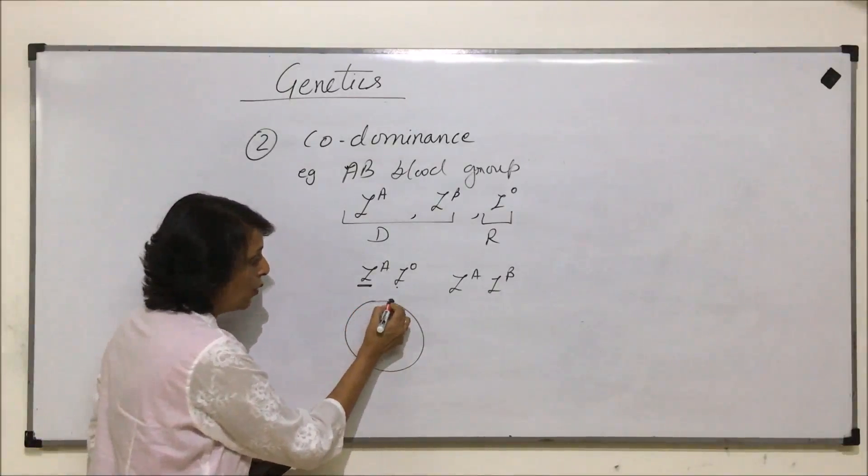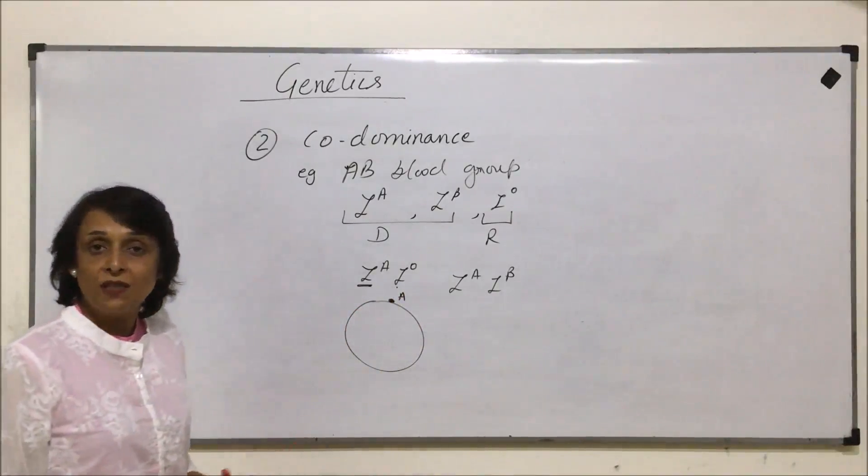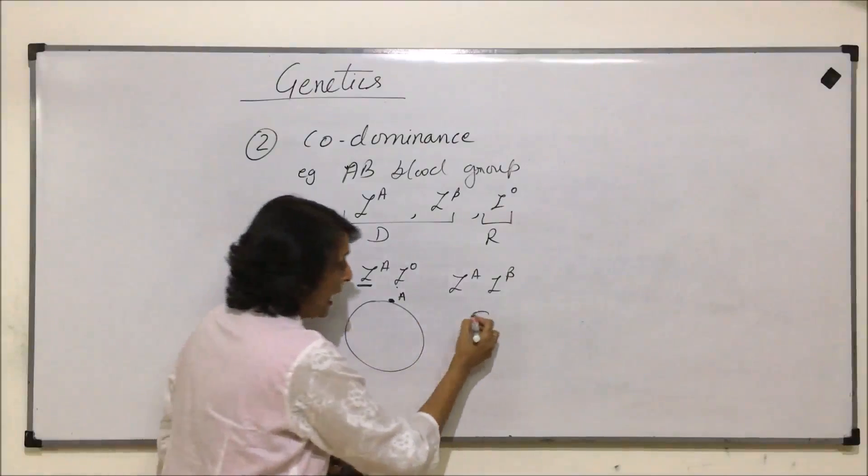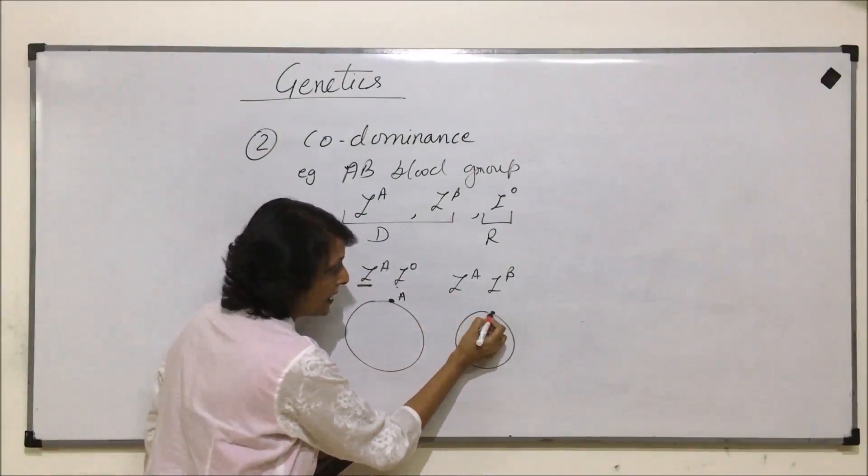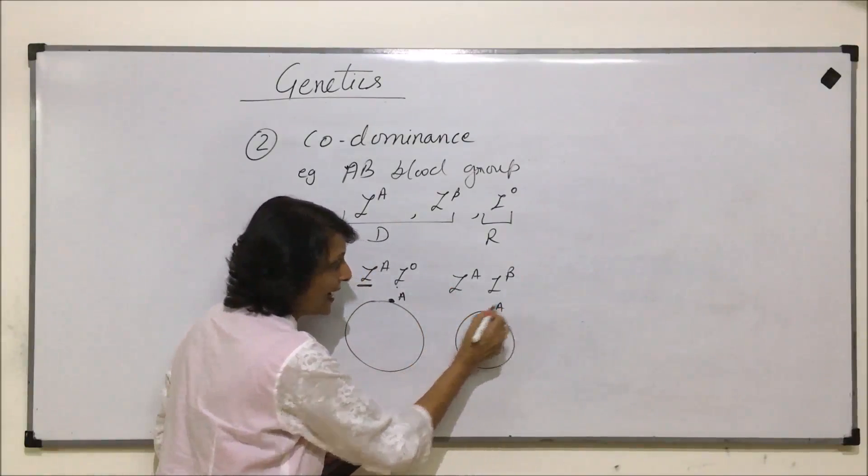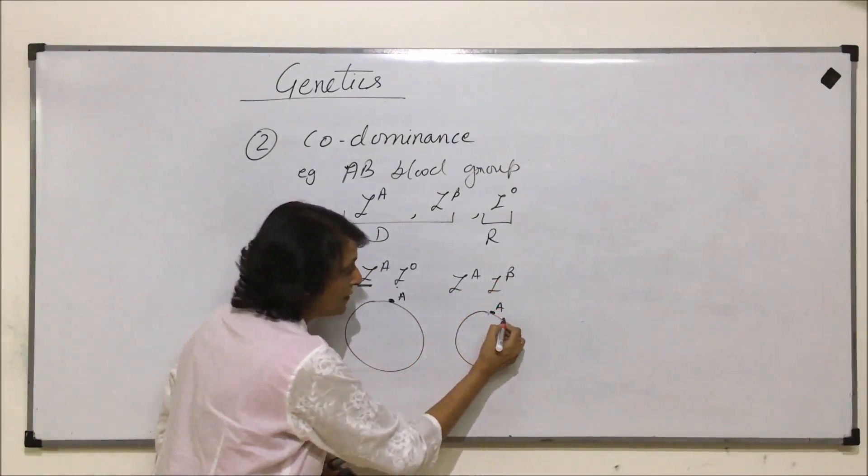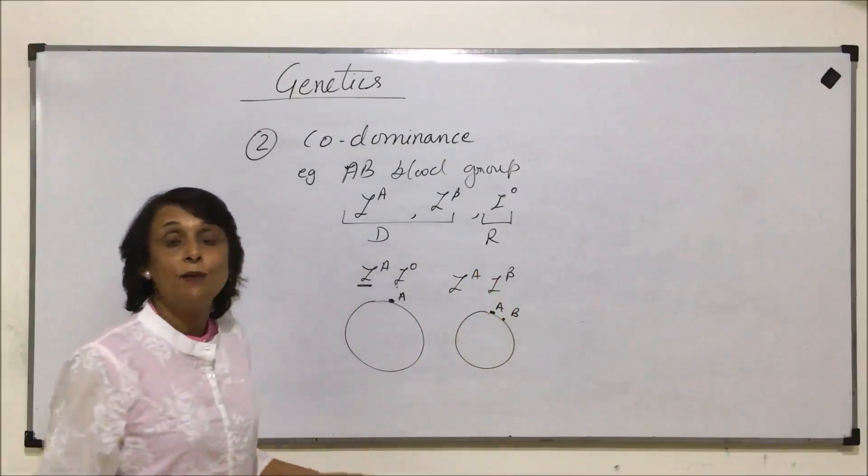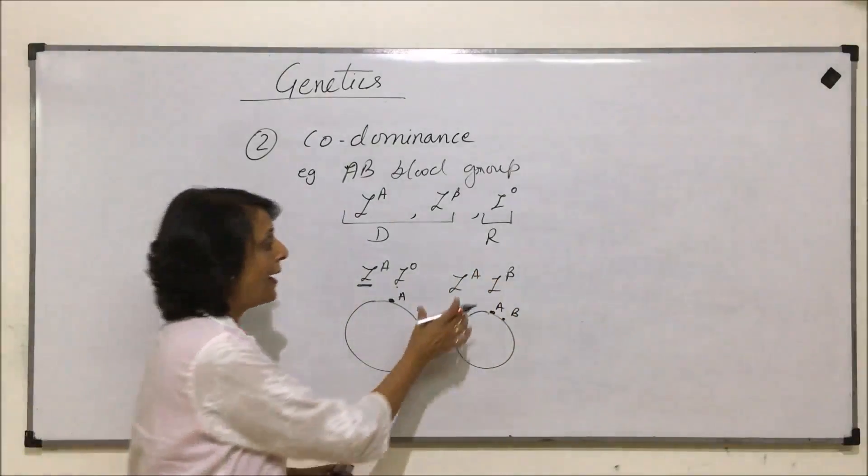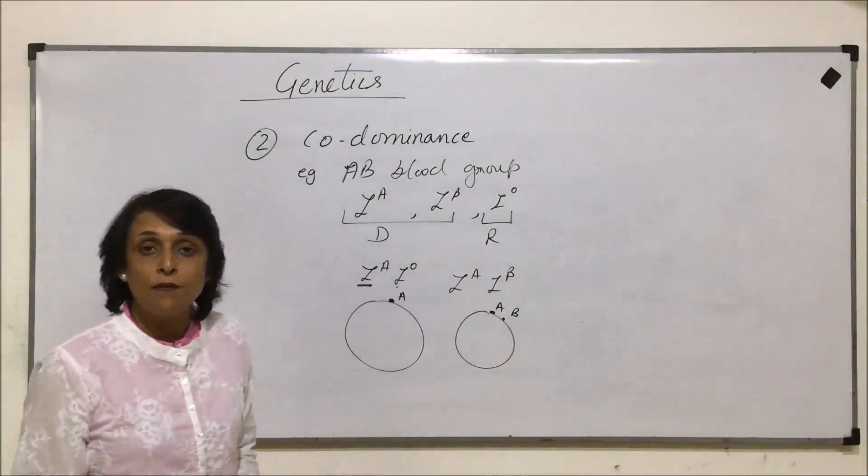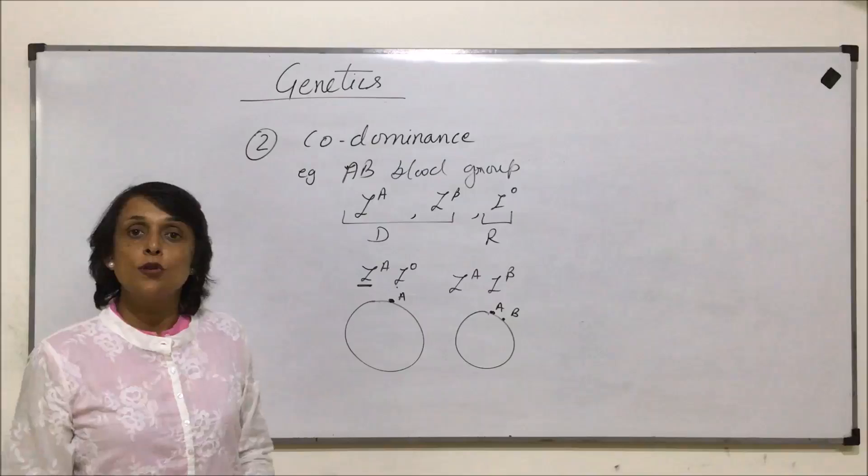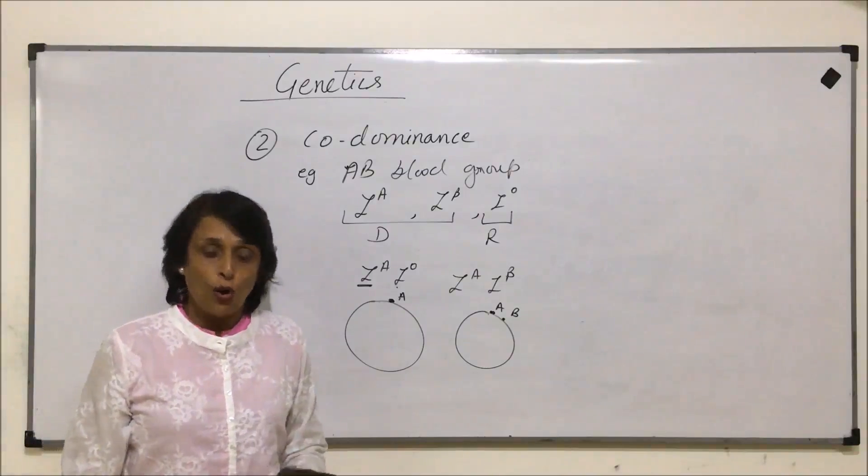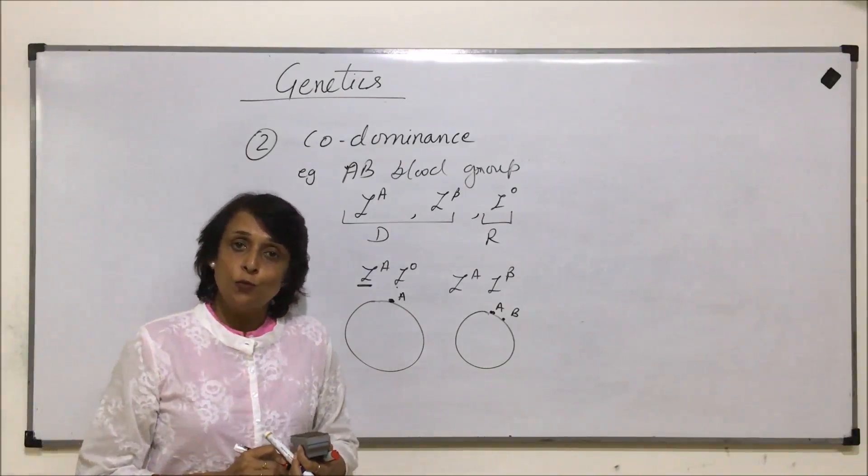But if an individual has IA and IB, that means there are two dominant genes. In the case of AB blood group, the IA gene will synthesize A antigen and the IB gene will synthesize B antigen. That means both are expressing themselves together, and both are dominating together. This is an example of co-dominance.